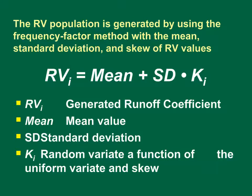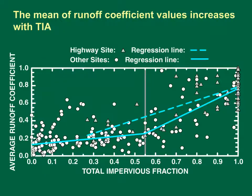SELDOM generates the runoff coefficients for each storm by using the frequency factor method with the mean, standard deviation, and skew of runoff coefficient values. This mean, standard deviation, and skew are fixed values for a given imperviousness. The skew of the runoff coefficient data defines the relation between the probability of occurrence and the frequency factor ki. This equation translates uniform random numbers into a representative population of runoff coefficients. The TIA estimate is used in SELDOM to calculate runoff coefficient statistics.